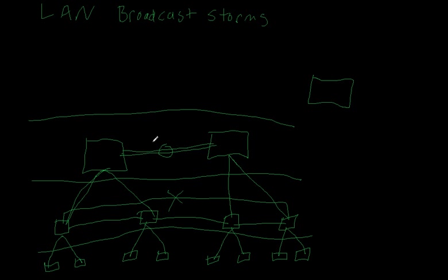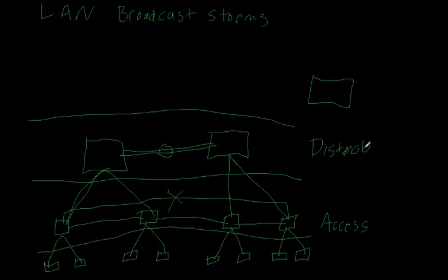You've got an EtherChannel, so you've got 200 megabits full duplex. This bottom layer is called your access layer, and this middle layer is called your distribution layer.